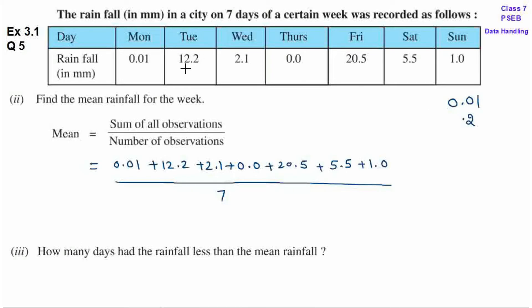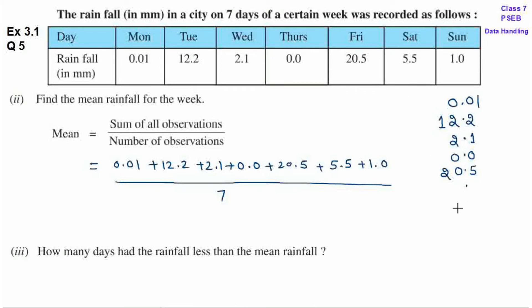Decimal के नीचे decimal. Whole number part में है 12 — 2 आएगा 1's place पे, 1 आएगा 10's place पे. Next है 2.1 — decimal के नीचे decimal, 1's place पे 2. Then 0.0 — decimal के नीचे decimal. Next है 20.5 — decimal के नीचे decimal, decimal के बाद है 5, decimal से पहले है 20. Next है 5.5 — decimal के बाद 5, 1's place पे 5. Next है 1.0 — decimal के नीचे decimal, decimal के बाद 0, decimal से पहले 1.